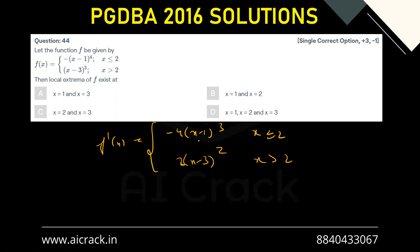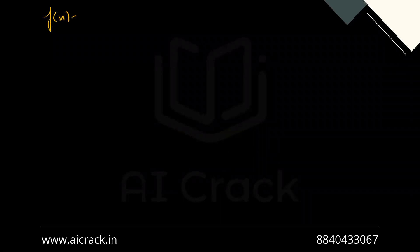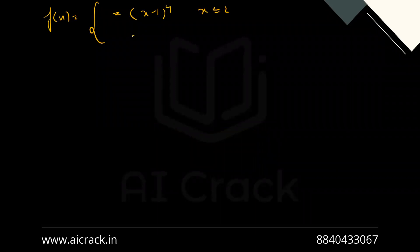We can clearly see that one and three are the points where f'(x) equals zero, so those are points of judgment. Also, the function definition changes at x equals two, which is also included as a point of judgment. So we have to judge the function at one, two, and three for local extrema. We have f(x) equals minus (x minus one) to the power four for x less than or equal to two, and (x minus three) to the power three for x greater than two.